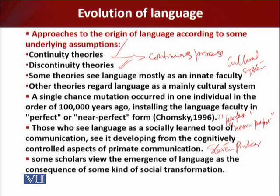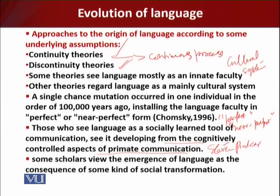Researchers like Pinker avoid speculating about specific precursors in non-human primates, stressing simply that the language faculty must have evolved in the usual gradual way. Those who see language as a socially learned tool of communication, such as Michael Tomasello, see it developing from the cognitively controlled aspects of primate communication — these being mostly gestural as opposed to vocal. Where vocal precursors are concerned, many continuity theories conceive of language evolving from early human capacities for song.